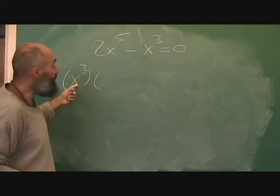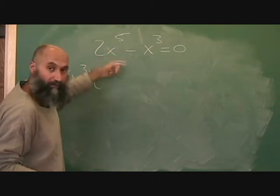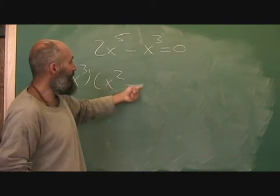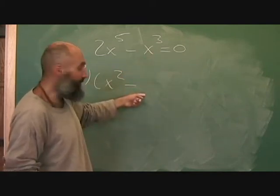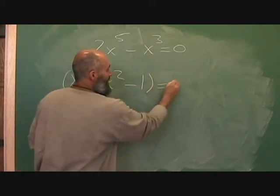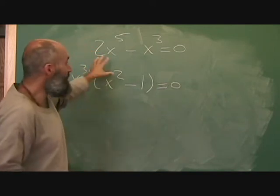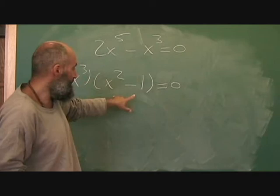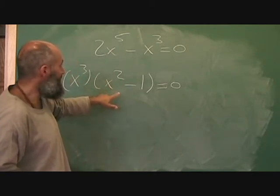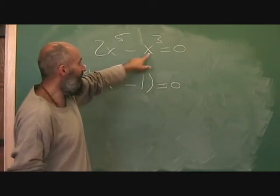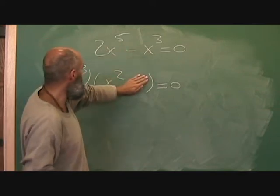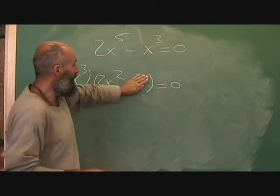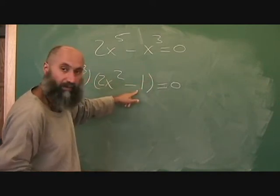So this becomes x cubed factored out. What do you multiply x cubed by to give you 2x to the power of 5? You multiply by x squared. Minus — you already have x cubed, so you reserve that spot with 1. Always remember: if you started off with two terms, you have to have two terms inside. A lot of people make the mistake of forgetting to put the 1.